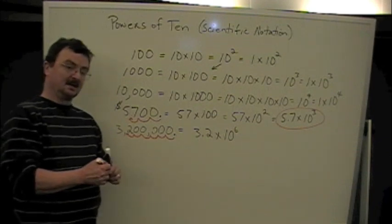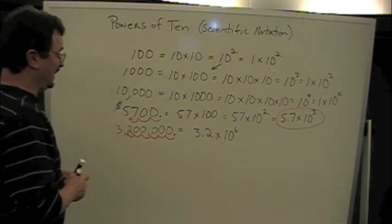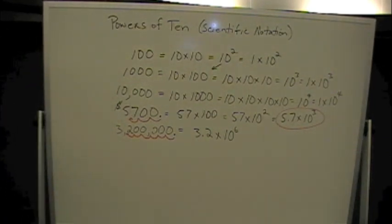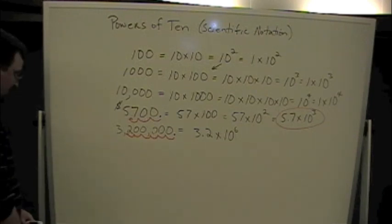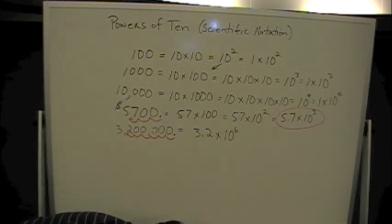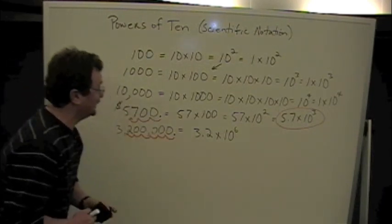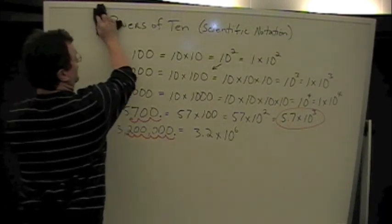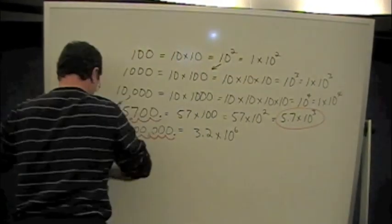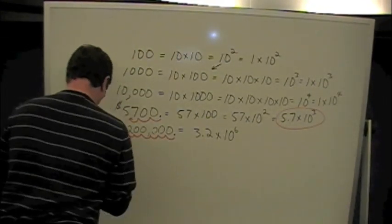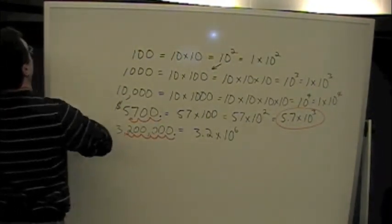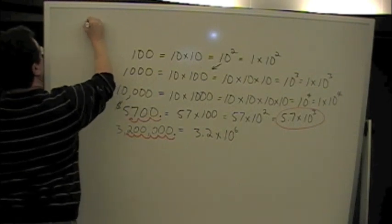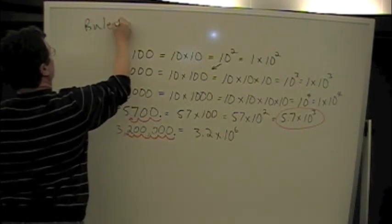Even though I normally do not like to teach in terms of rules, here's rule number one for scientific notation: every move of a decimal to the left adds one exponent.